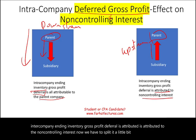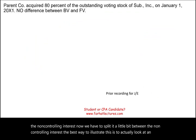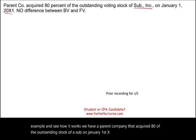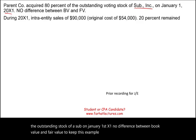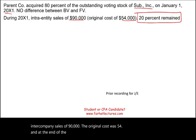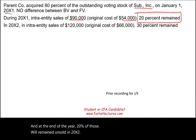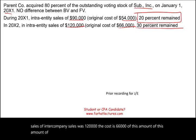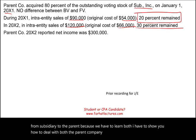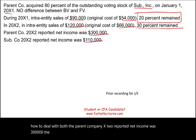To illustrate this, consider an example: a parent company acquired 80% of a subsidiary's outstanding stock on January 1, X1, with no difference between book value and fair value. In 20X1, intercompany sales were $90,000 with an original cost of $54,000, and 20% of the inventory remained unsold at year end. In 20X2, intercompany sales were $120,000 with a cost of $66,000, and 30% remained unsold. The parent's X2 net income was $300,000 and the subsidiary's was $100,000.